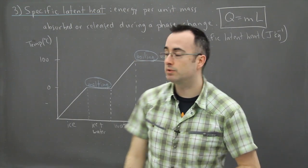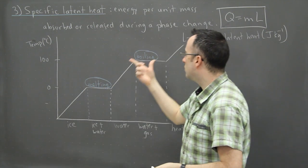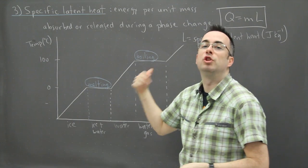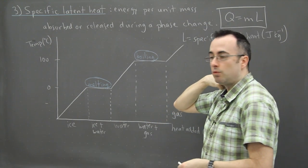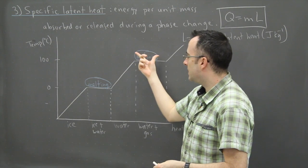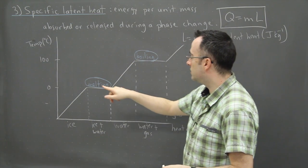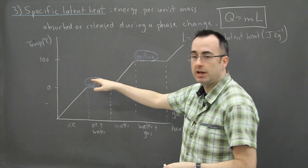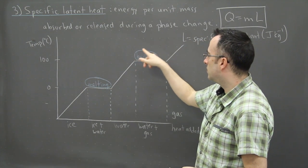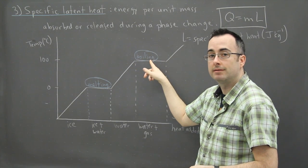So the key thing to remember here is whenever you have a phase change, so in this case either melting or boiling or you can have it go the opposite direction as well. You could lower the temperature and reverse this process, but as long as you're changing the phase then you have to consider some energy involved. In this case energy is absorbed in melting and breaking the bonds here, and furthermore more energy here is being absorbed in order to change things from a liquid to a gas.